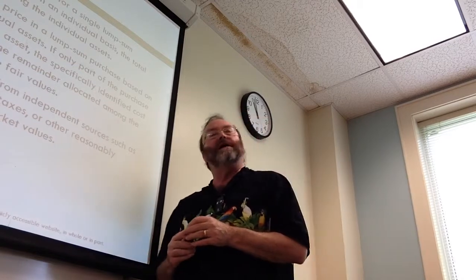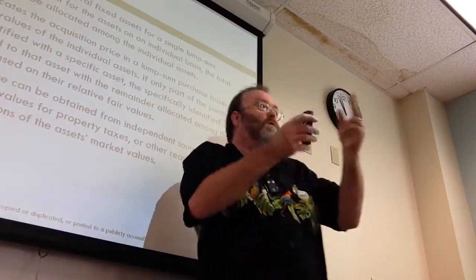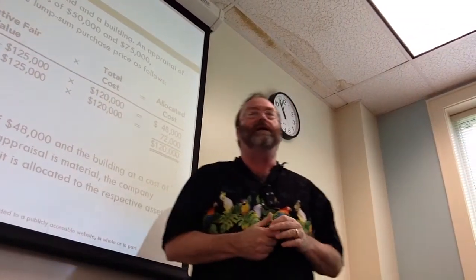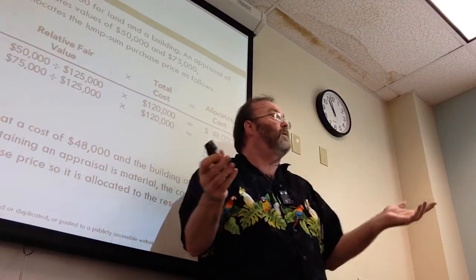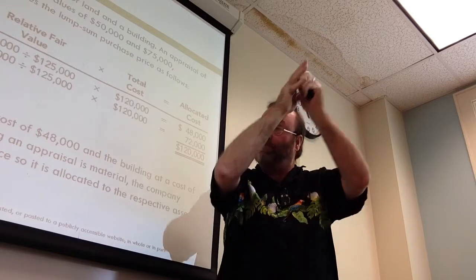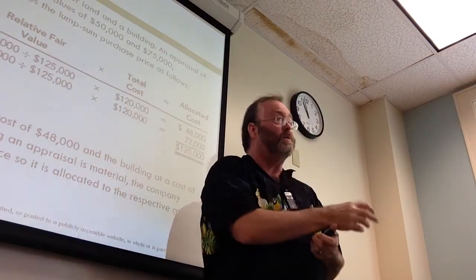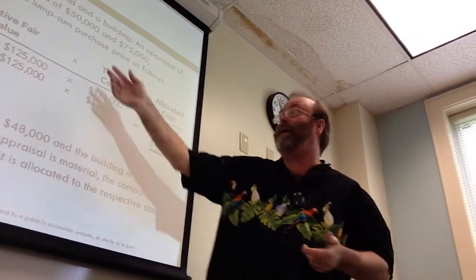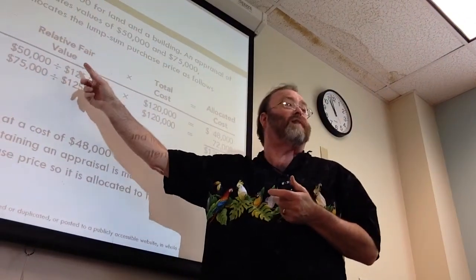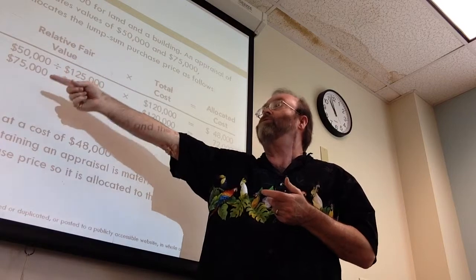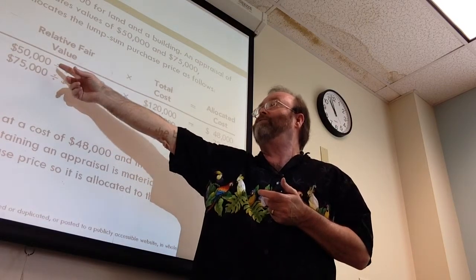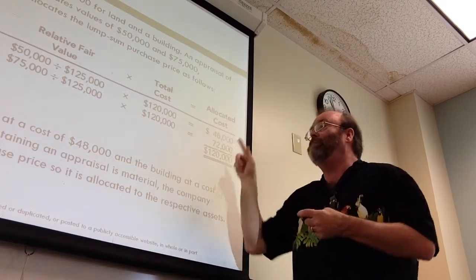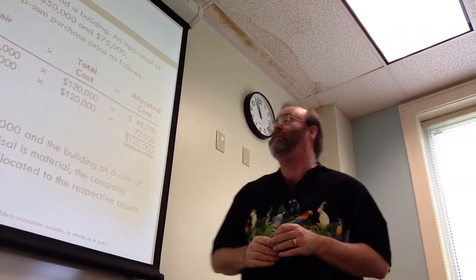Lump-sum purchases are very common — this is where for a single purchase price you buy more than one asset. The most common example is land and a building. You buy one piece of property under one contract, but it's really two pieces because land is not depreciable while a building is. You have to split it based on the pro-rata fair market value. If the appraised values total $125,000 and land is $50,000, then 50/125 times the $48,000 purchase price gives you the debit to land, and the remainder is the debit to building.